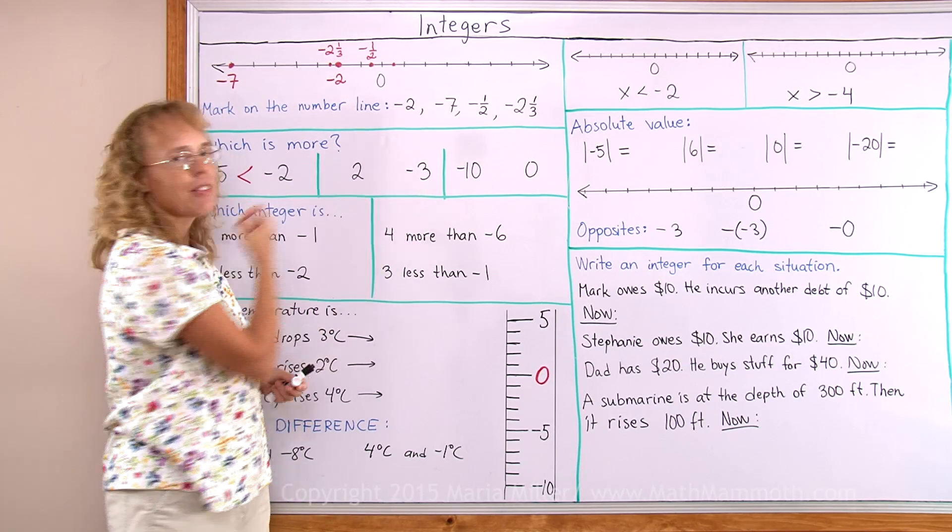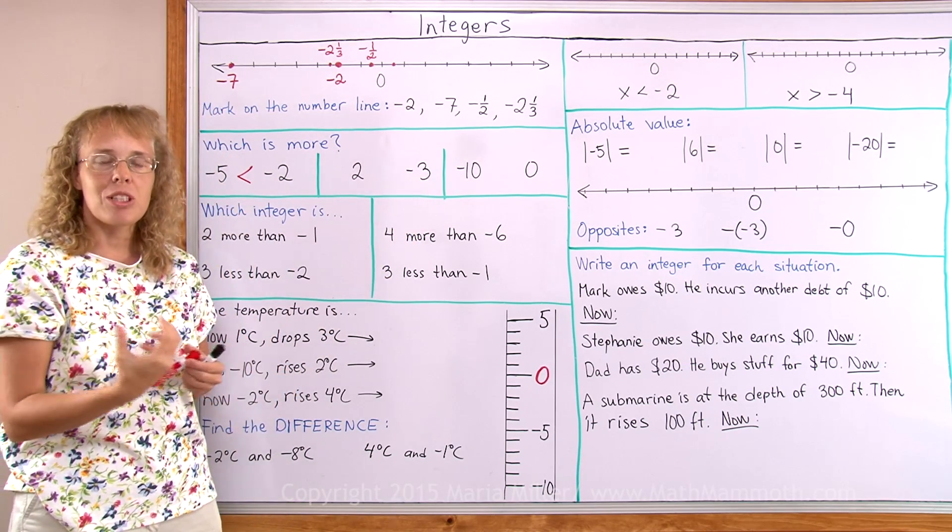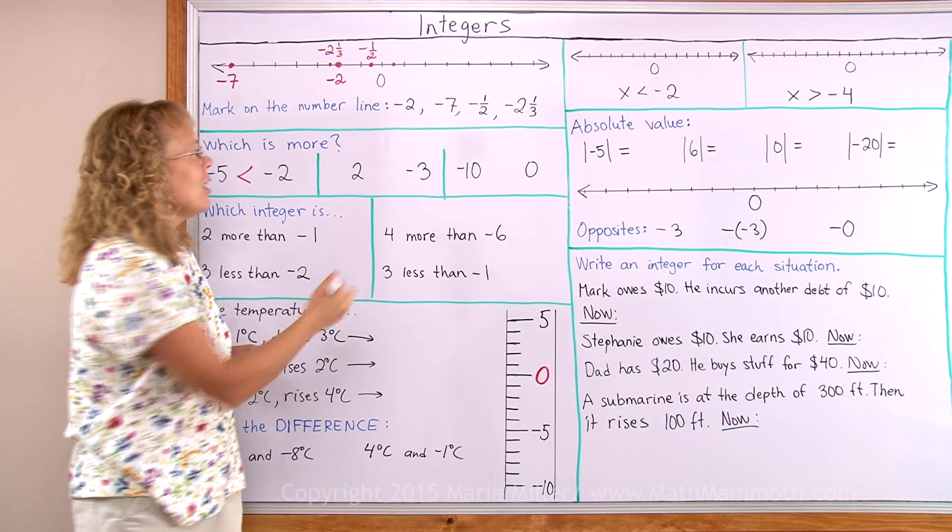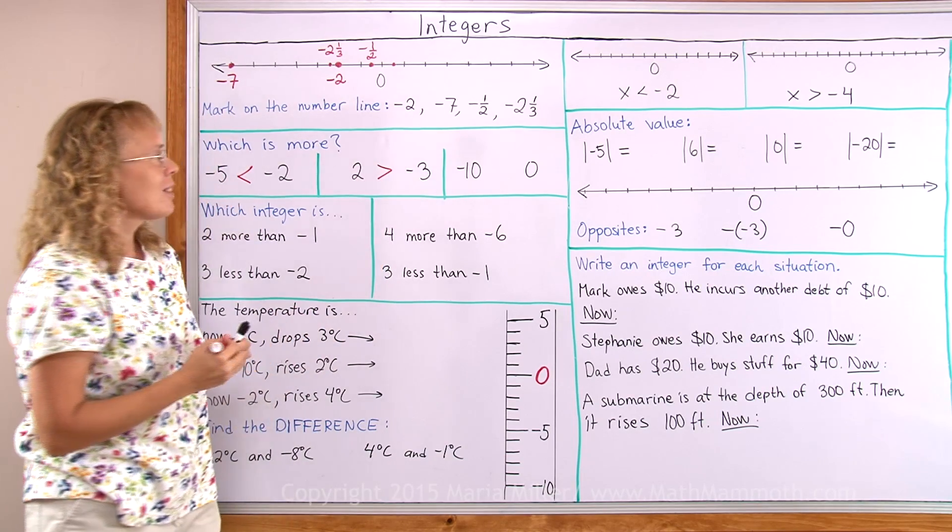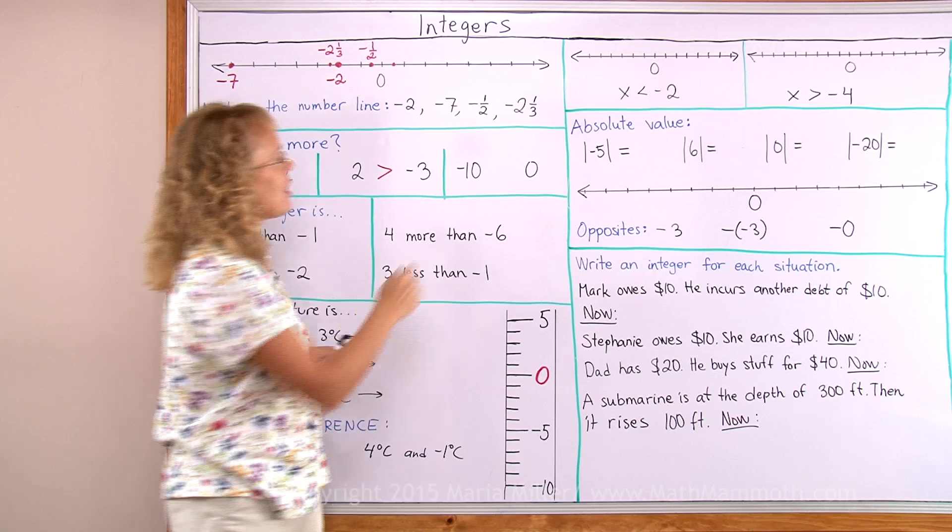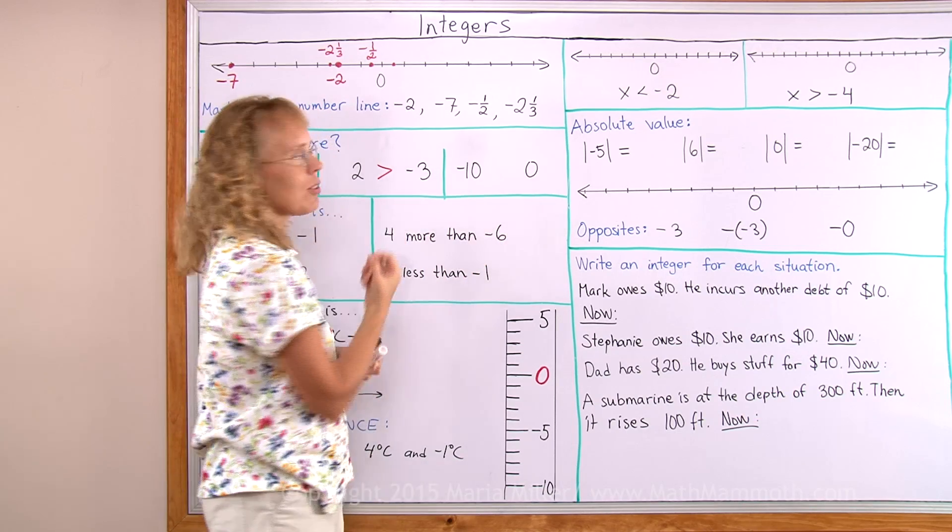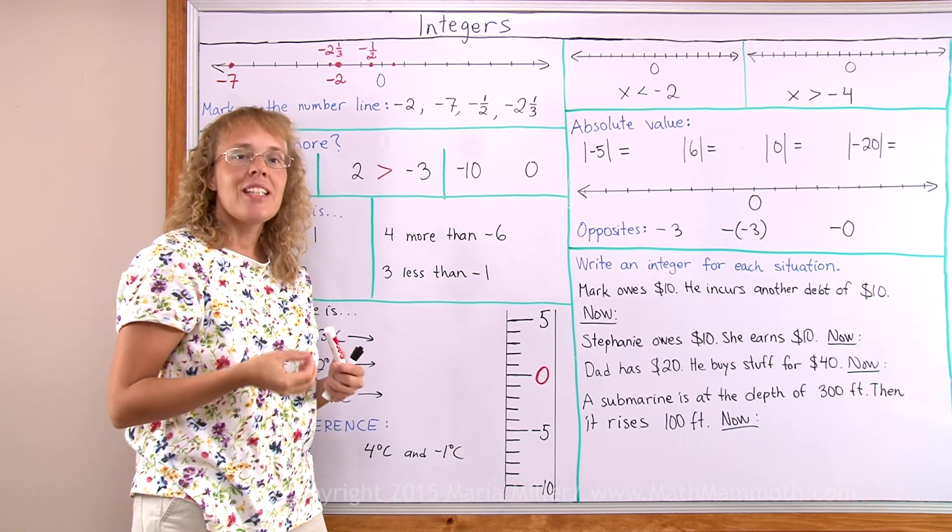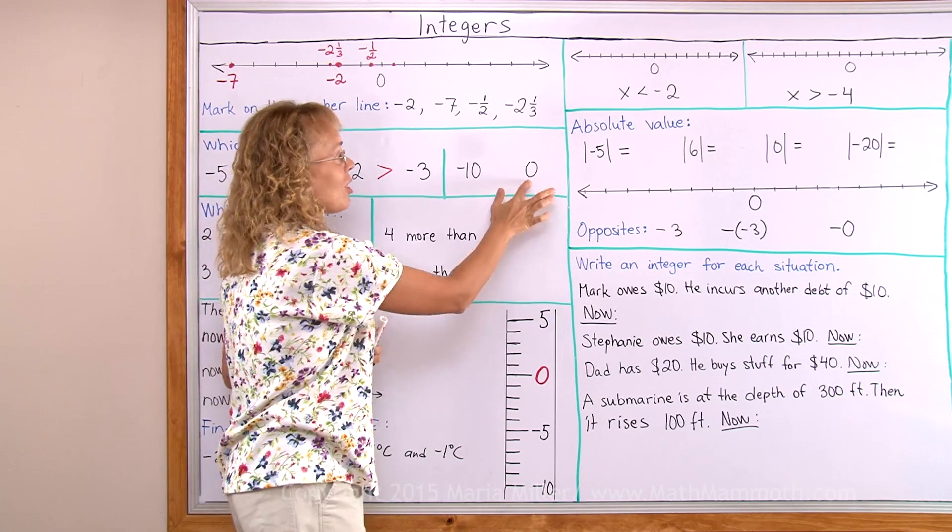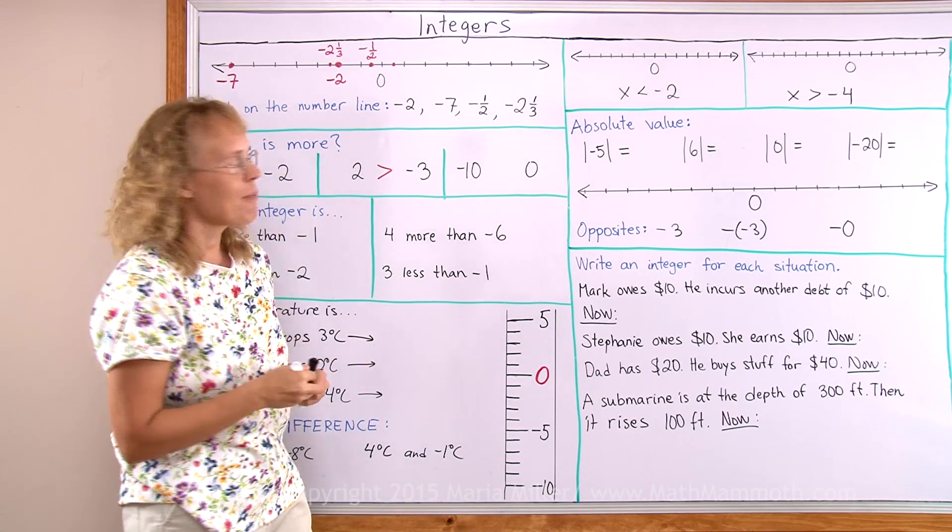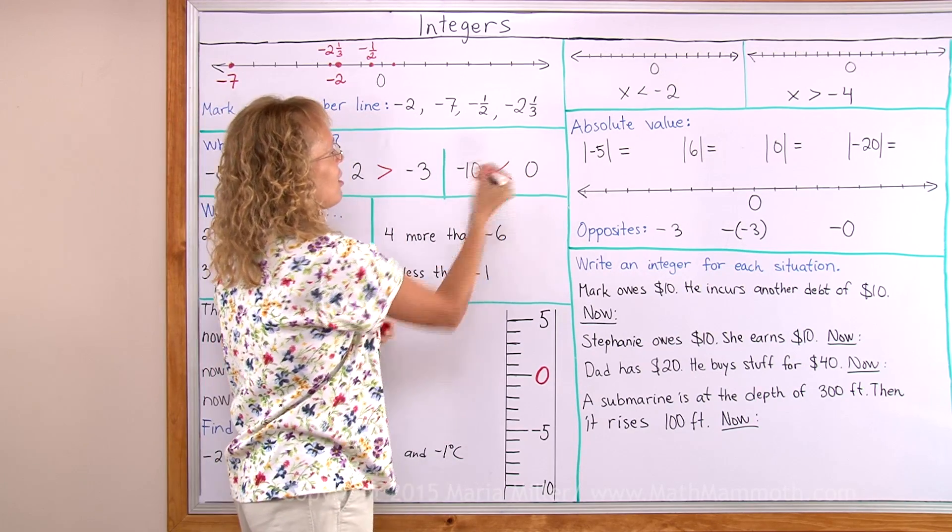How about 2 and negative 3? Which one is the better money situation or which one is more? 2 is of course more money than being $3 in debt. And then how about negative 10 and 0? Is it better to be $10 in debt or not to be in debt and not to have any money? It is, again, 0 is more.